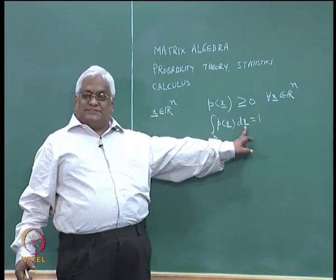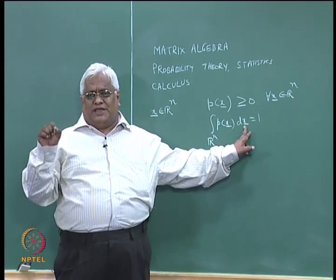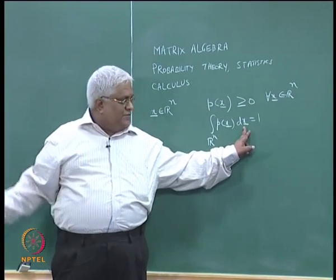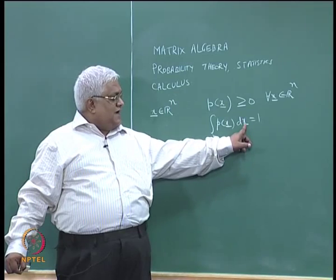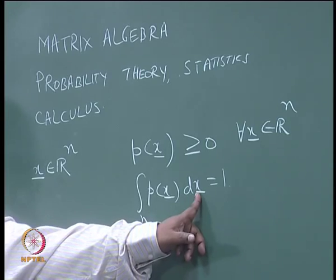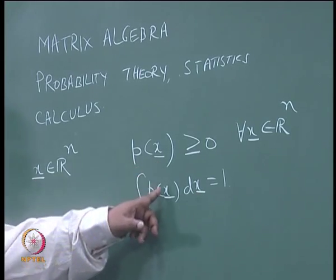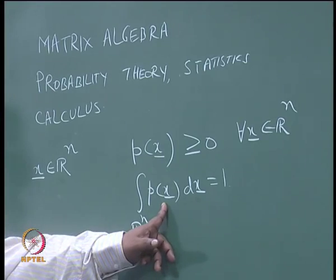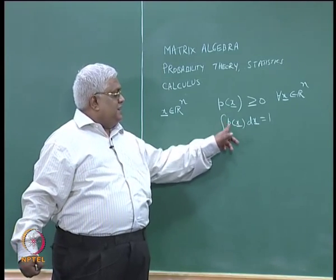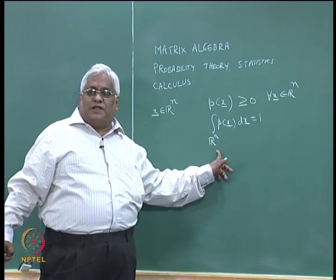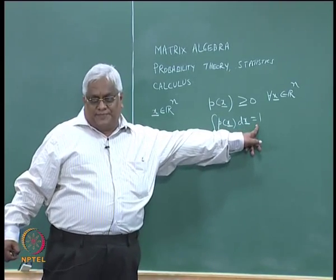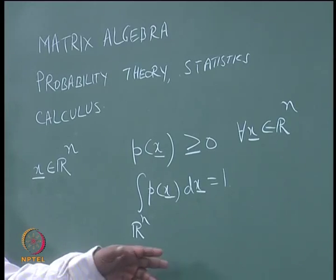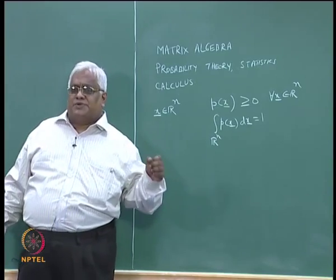This dx means d x1, dx2, up to dx_n — it is represented as dx with an underline indicating a column vector. The integral of P(x) dx over the whole of R^n equals 1. Any function satisfying these two properties is known as a probability density function over n-dimensional Euclidean space.